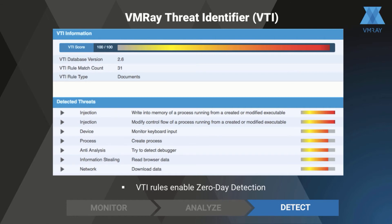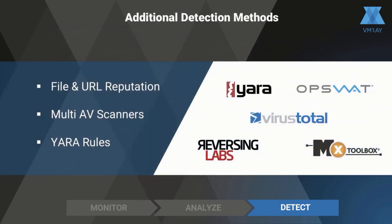By analyzing completely independent of signatures, VMRay Analyzer can detect zero-day malware that otherwise evades detection. Malware may not fully execute if it tries to reach a command and control server that is already down. In circumstances like this,